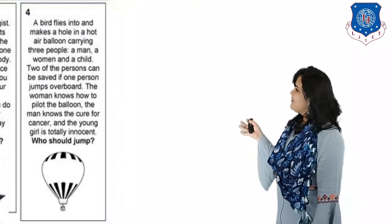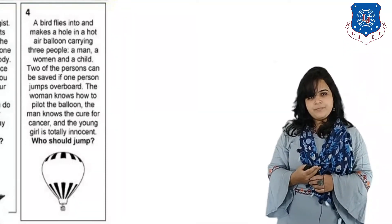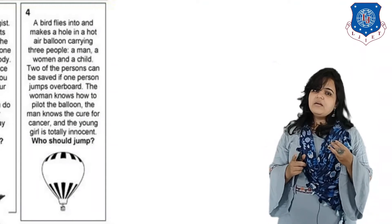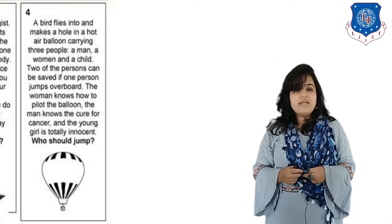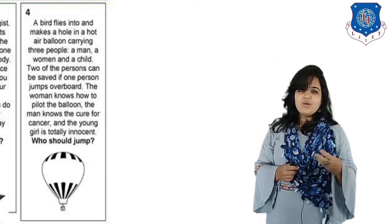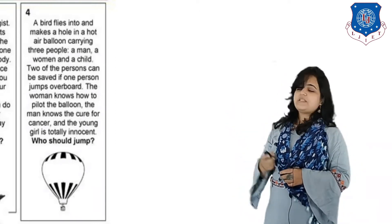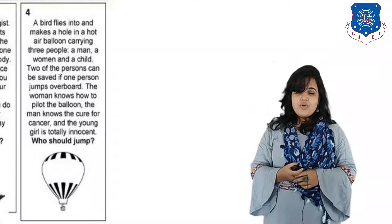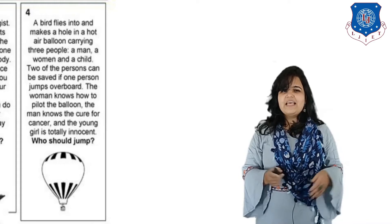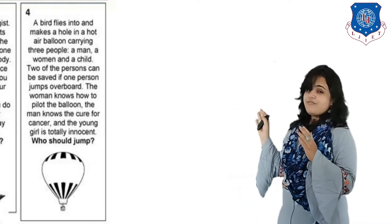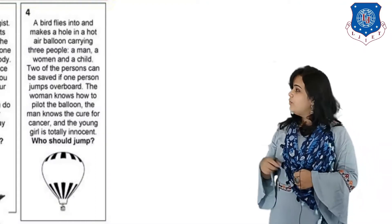The last dilemma is the parachute dilemma. Three people were riding a parachute — a lady, a man, and a little girl. The man knew how to treat cancer, the lady knew how to drive the parachute, and the little girl was very innocent. Only two of them can be saved due to only two extra spaces in the parachute. Who should be told to sacrifice their life? Difficult, right? Such are the cases of moral or ethical dilemmas, and you need to choose what to do.